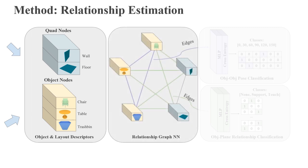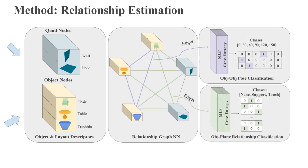We construct a message-passing neural network to predict relationships for each edge, characterizing layout support for objects and relative object poses.